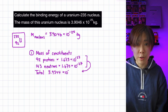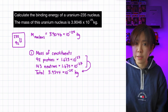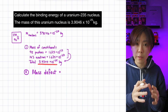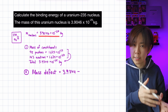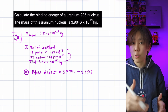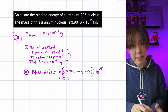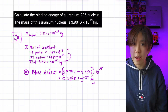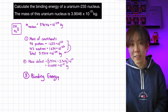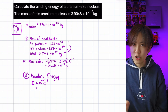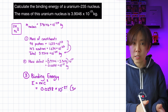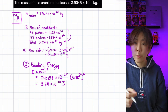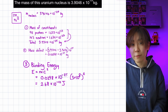Their total mass becomes 3.9344 times 10 to the minus 25 kilograms. The next step is to subtract the mass of the nucleus from the constituent, and I want to carry all the significant figures until the very end to reduce any rounding errors. So here we calculate the mass defect to be 0.0298 times 10 to the minus 25 kilograms. The last step is the simplest part: E is mc squared, so the binding energy is equal to the mass defect times the speed of light squared. That gives us a binding energy of the uranium nucleus of 2.68 times 10 to the minus 10 joules.